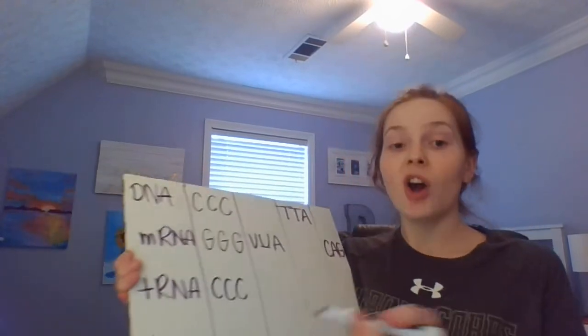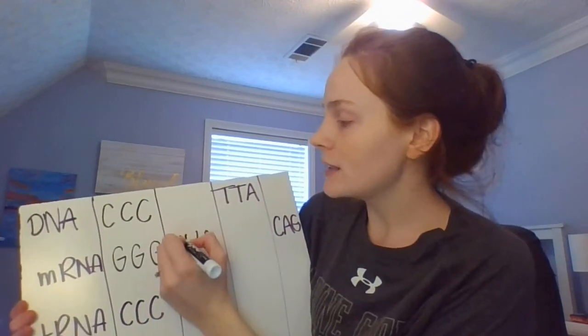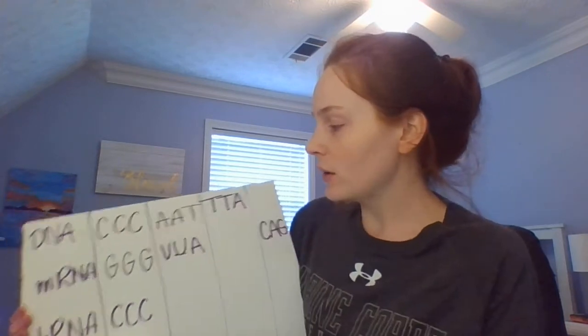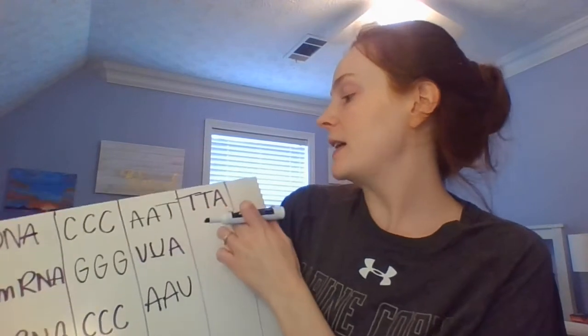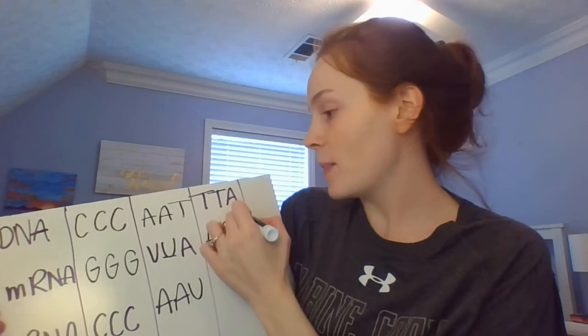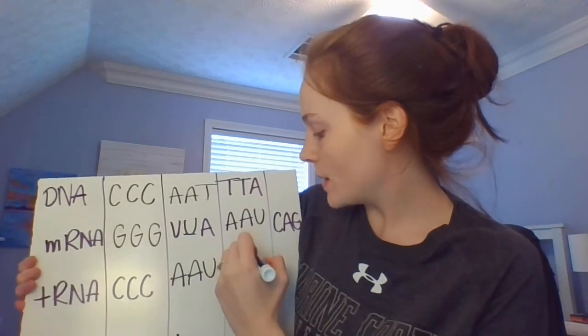mRNA is created off of DNA so they should match. U stands for T because mRNA doesn't have thymine — it has uracil. So T binds with A, U binds with A, U binds with A, and A binds with T. Remember in DNA you do have T's, so this is a T, not a U. Then for tRNA, the anticodon pairs with the mRNA codon: U pairs with A, U pairs with A, and A pairs with T — but since this is RNA, it's a U.